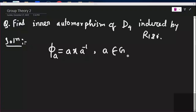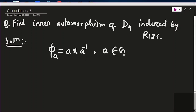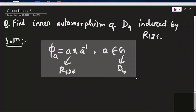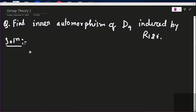Here, a belongs to the group G. In our problem, G is the group D4 and the element a is r180°. So we have to find the inner automorphism induced by r180°.